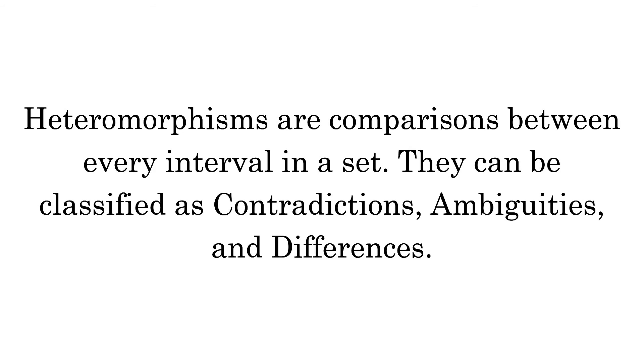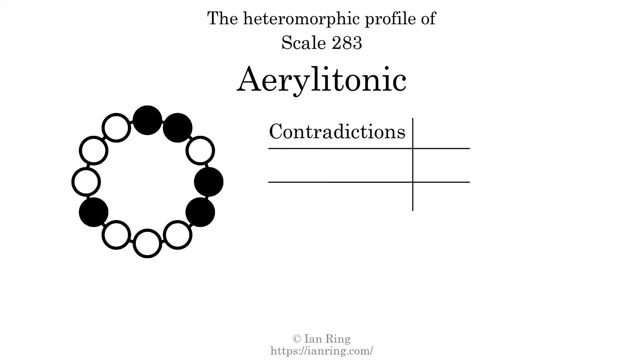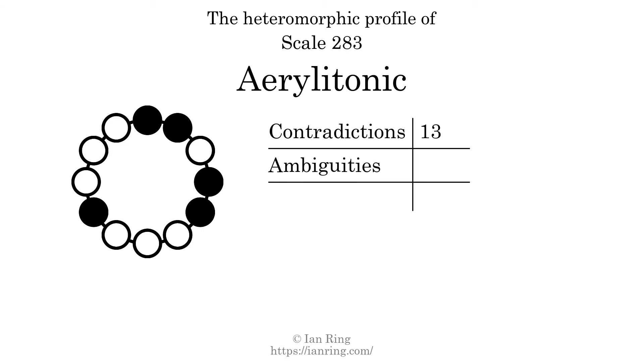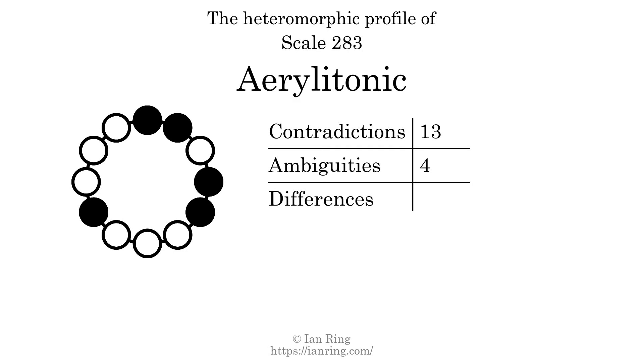Heteromorphisms are comparisons between every interval in a set. They can be classified as contradictions, ambiguities, and differences. A contradiction exists when a small generic interval has a bigger specific size than a larger generic interval — for example, if a generic third interval has a larger size in semitones than a generic fourth interval. The number of contradictions in this scale is 13. An ambiguity exists when two intervals have the same specific size but different generic intervals. The number of ambiguities in this scale is 4. A difference exists when two intervals have the same generic size but different specific sizes — for example, a major third and a minor third. The number of differences in this scale is 32.